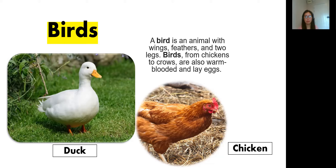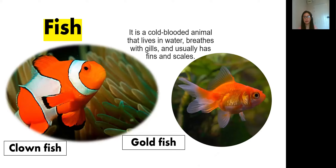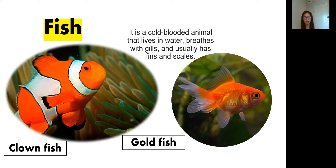Next is fish. Everybody say the word: fish. So a fish is a cold-blooded animal that lives in water, breathes with gills, and usually has fins and scales. Again, fish usually has fins and scales. The examples of fish are: the first one is clownfish and the second one is goldfish.